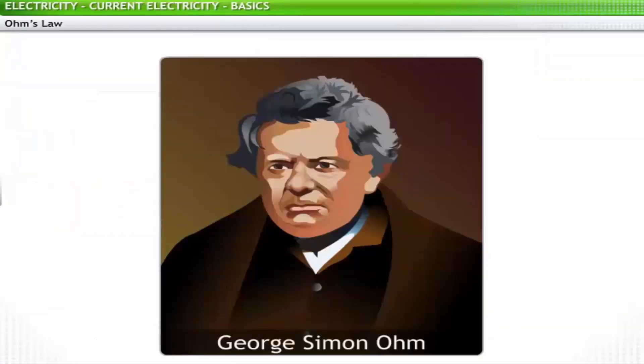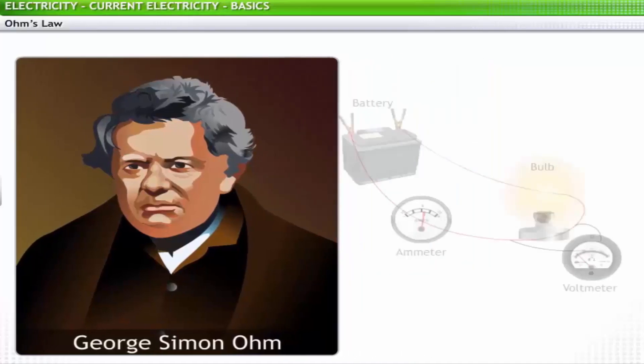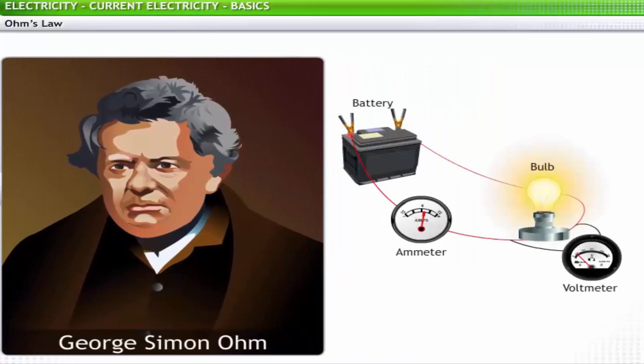In 1827, a German scientist, George Simon Ohm, conducted a series of experiments to study the variations in electric current when the potential difference across a conductor was changed. With the findings of his experiments, he postulated Ohm's law, which explains the relationship between electric current, voltage, and resistance.